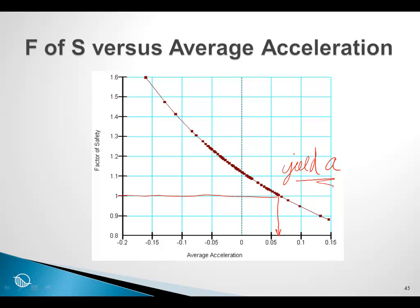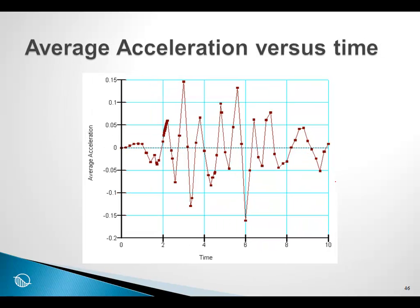Knowing what the yield acceleration is, we can then go to a graph such as this that gives the average acceleration versus time. Knowing that the yield acceleration is some value close to 0.5, for example, we can integrate the area under this curve. We can integrate all of these areas where the average acceleration has been greater than the yield acceleration. Having completed that integration, we get a velocity versus time curve.